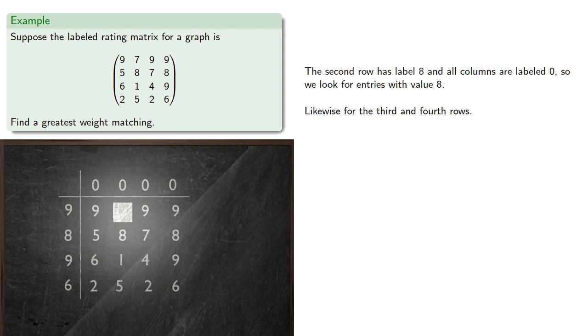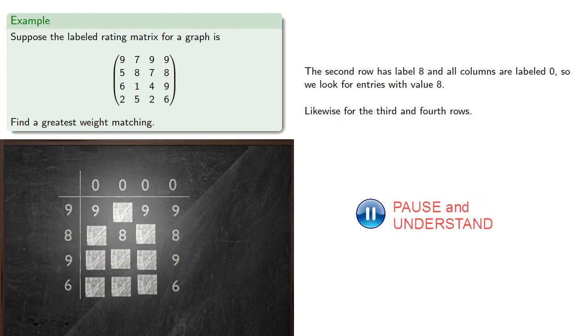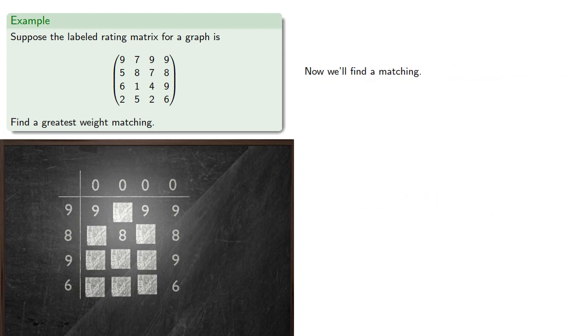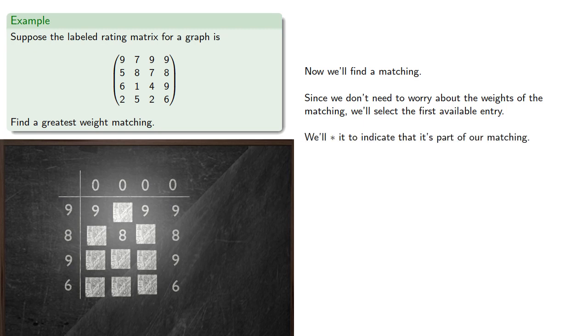The second row has label 8 and all columns are labeled 0, so we look for entries with value 8. And likewise for the third and fourth row. Now we'll find a matching. Since we don't need to worry about the weights of the matching, we'll simply select the first available entry, and we'll star it to indicate that it's part of our matching.